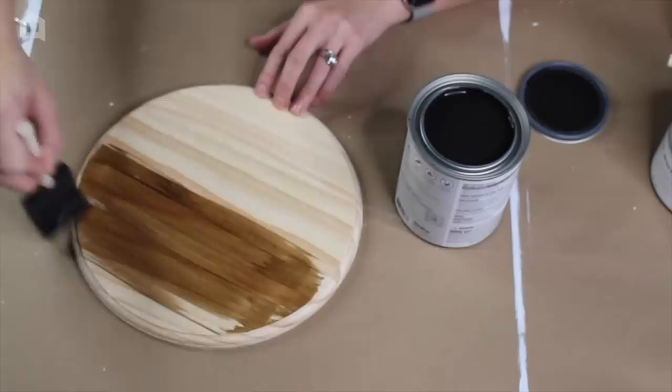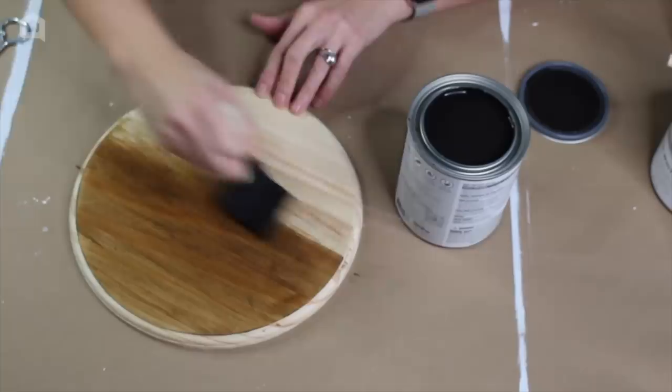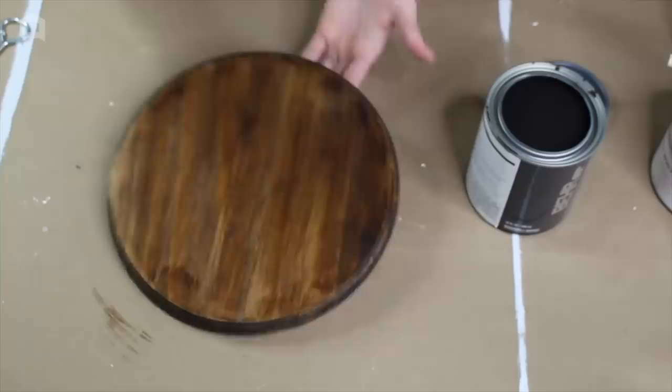We're just going to go with the wood grain across. Since this is a raw wood finish, really no sanding is necessary since it's already natural. But if you are working with something that maybe you need to sand down first, that is also fine. We're going to wait just a couple more minutes and then we're going to wipe it away.